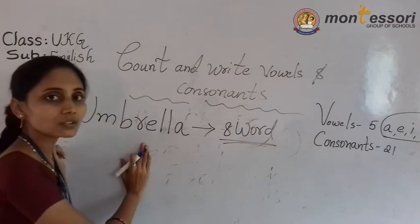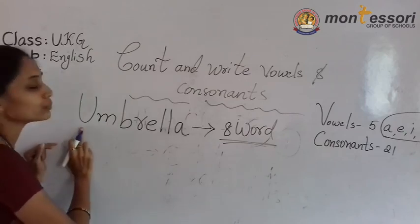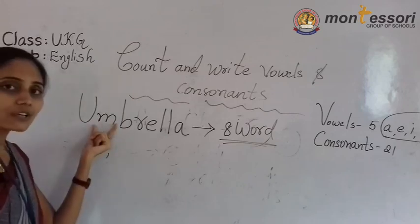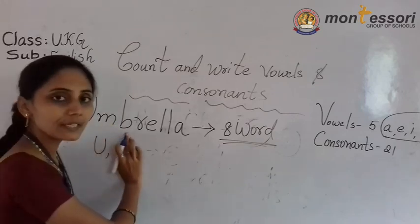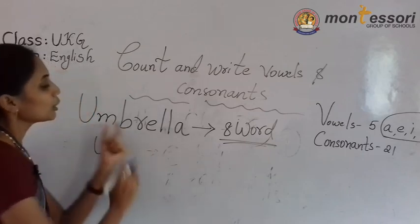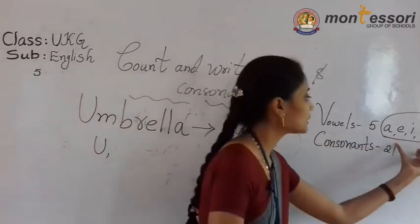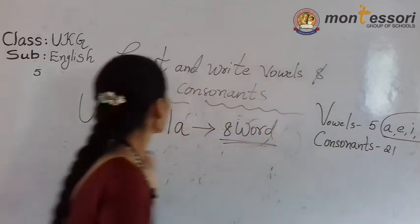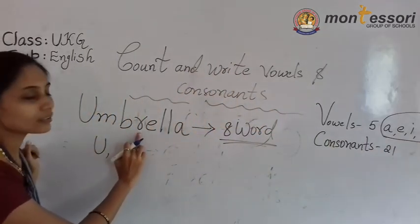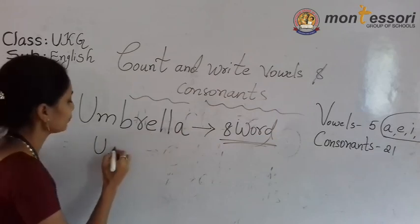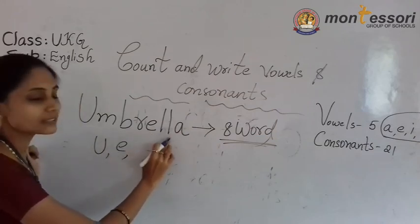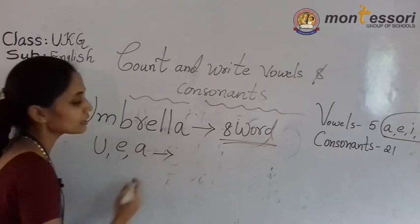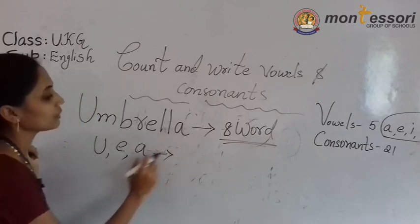How many vowels are there? How many consonants are there? U — vowel or consonant? Vowel letter. Next, M — vowel or consonant? Consonant. B — vowel or consonant? Consonant. Select only from these five vowel letters. Next, R — consonant. Next, E. Next letter, L. Next, L — these two are consonants. So next letter, A. How many vowels are there now? 1, 2, 3 — 3 vowels.